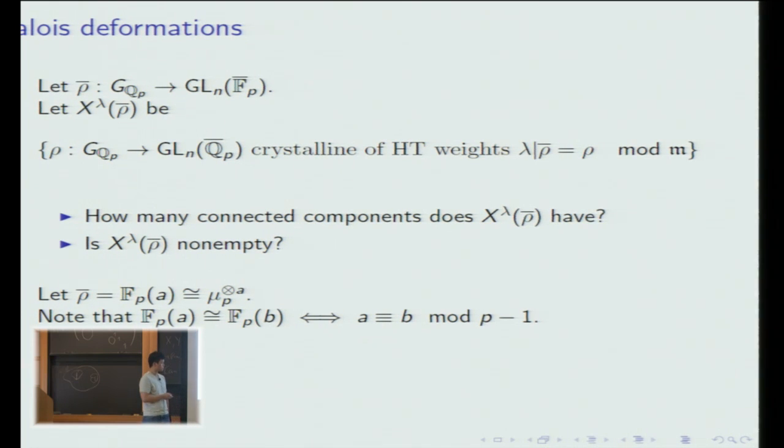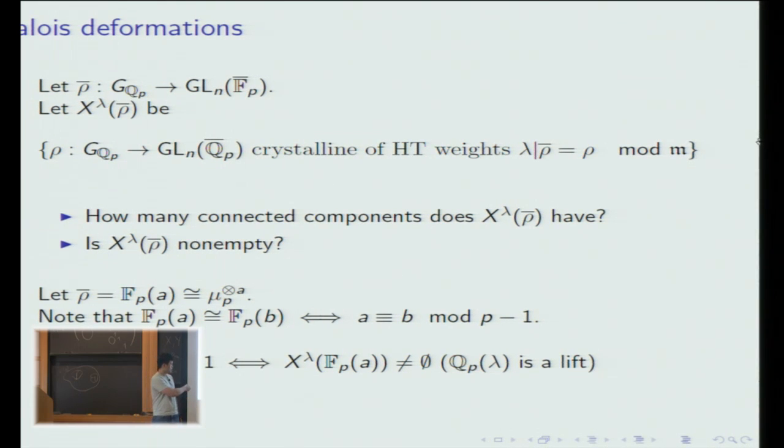Essentially by Fermat's little theorem, we know that F_p(a) is the same as F_p(b) if and only if a and b are congruent mod p-1. In this case, λ is just a single number. λ and a are congruent mod p-1 if and only if this deformation space is nonempty. One implication is easy to show because Q_p twisted by λ is clearly a lift of F_p(a). When it's not empty, it's just given by Z̄_p. This comes from the behavior of Frobenius. This gives a complete answer to both of these questions in the case n equals 1.